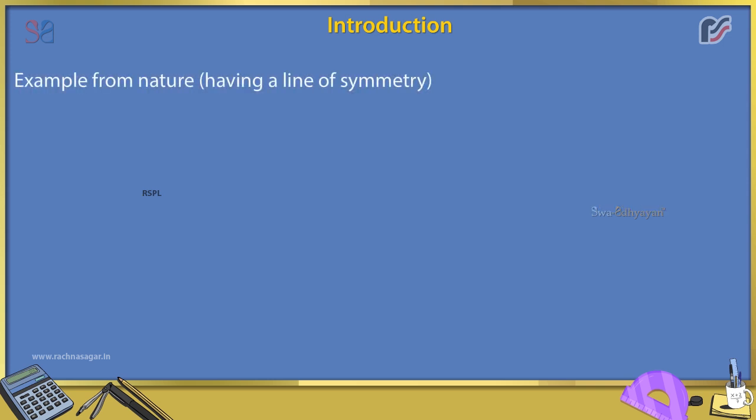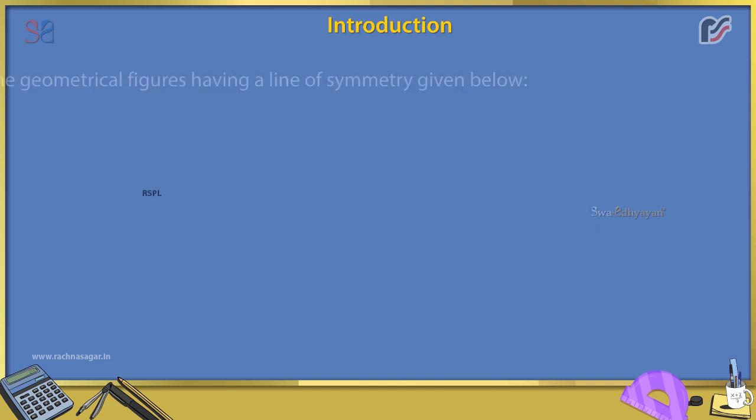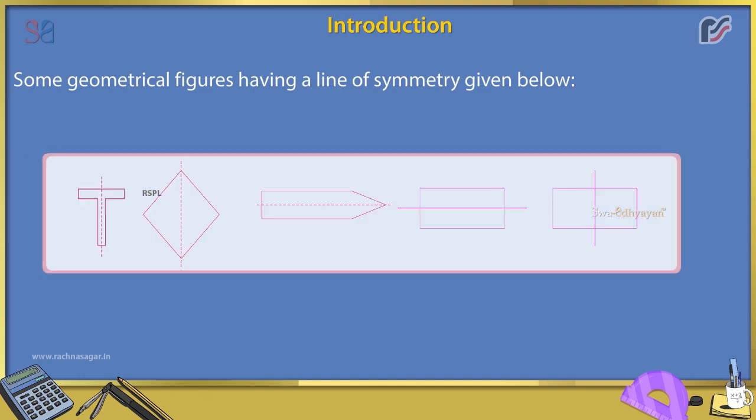Examples from nature having a line of symmetry: 1. Butterfly, 2. Taj Mahal, 3. Sunflower. Some geometrical figures having a line of symmetry are given below.